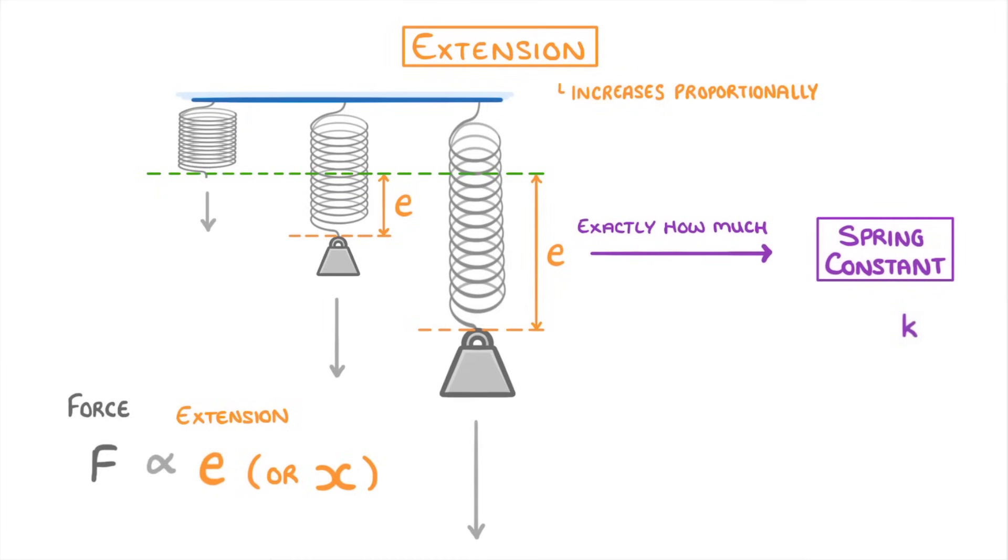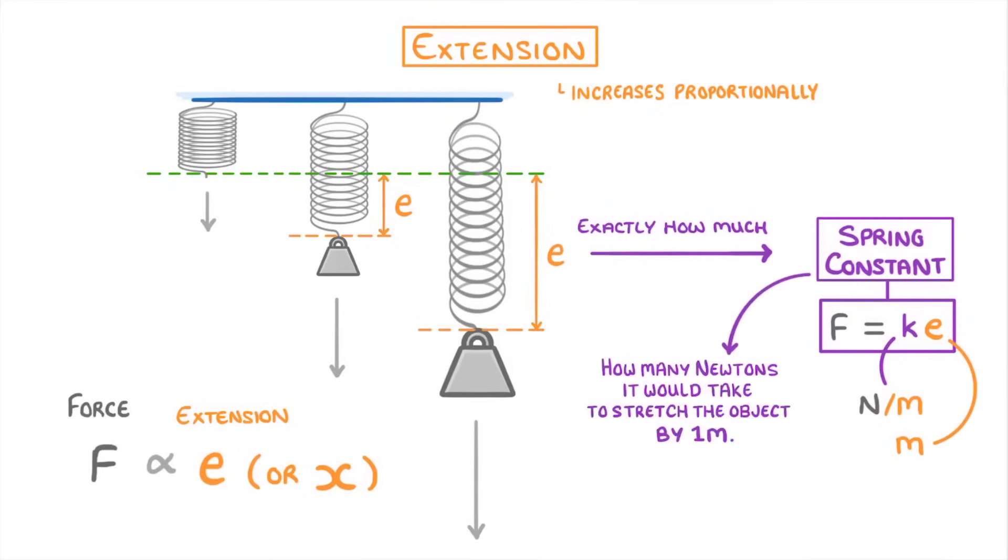And if we add this into our force extension equation, that we wrote in the bottom left, we get F equals KE, with K being measured in newtons per metre, and extension in metres. The spring constant tells us how many newtons it would take to stretch the particular object, like the spring, by one metre. So the higher the spring constant, the stiffer the material, because it requires more force to stretch it.